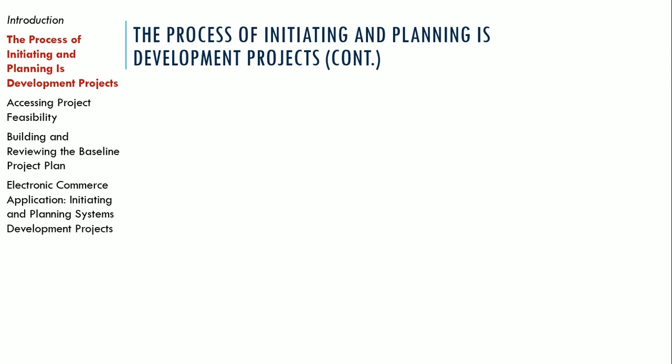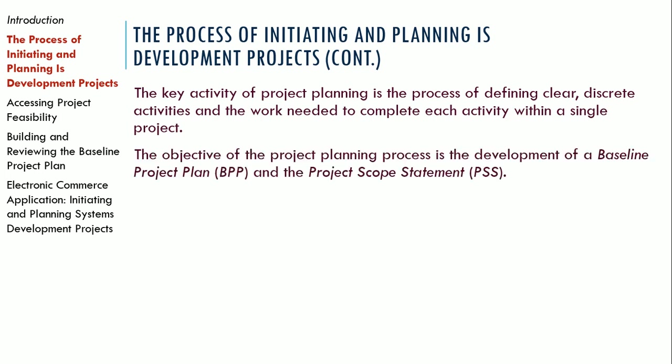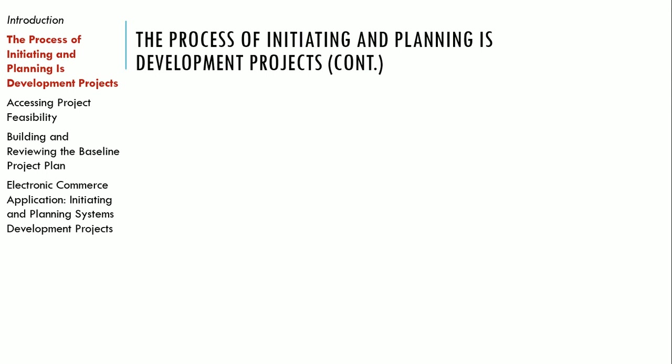The key activity of project planning is going to be defining clear, discrete activities and the work needed to complete each activity within a single project — that's our work breakdown structure. We're talking about planning with reference to the systems analysis software development lifecycle. The objective of the planning process is the development of the baseline project plan, which we're doing all of this work to produce. That then sets the stage for us to move into our analysis phase in the next slide deck.